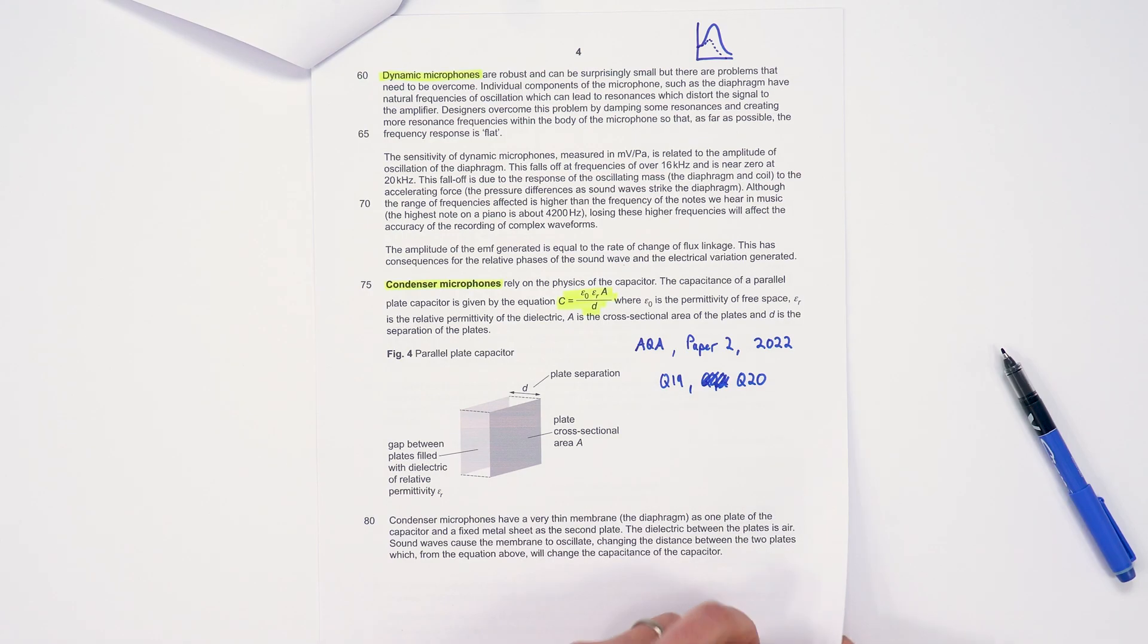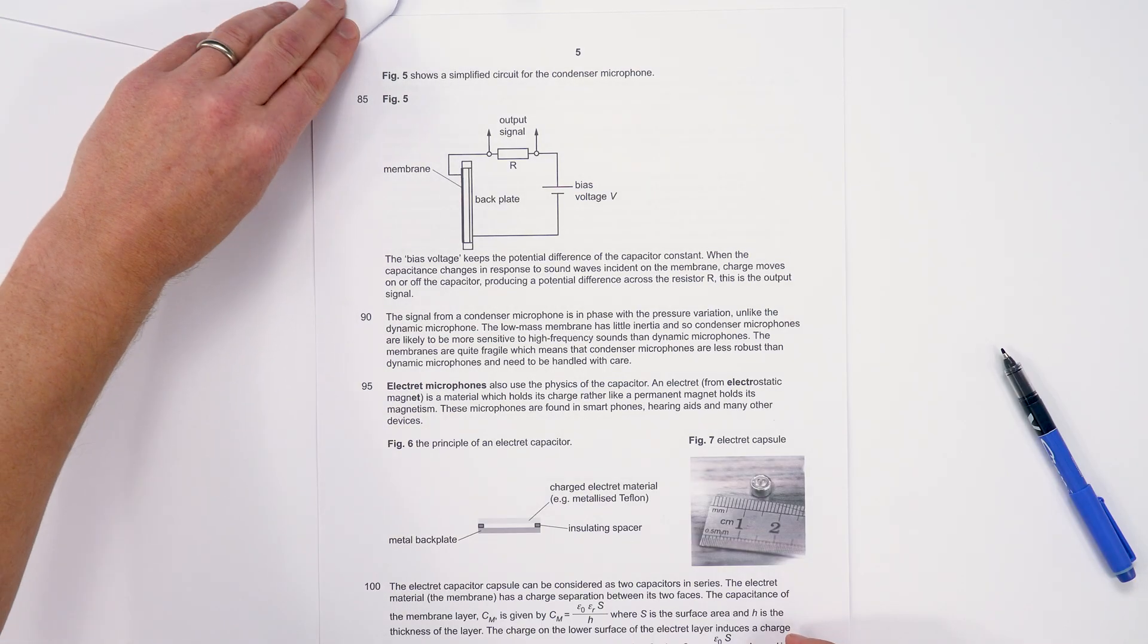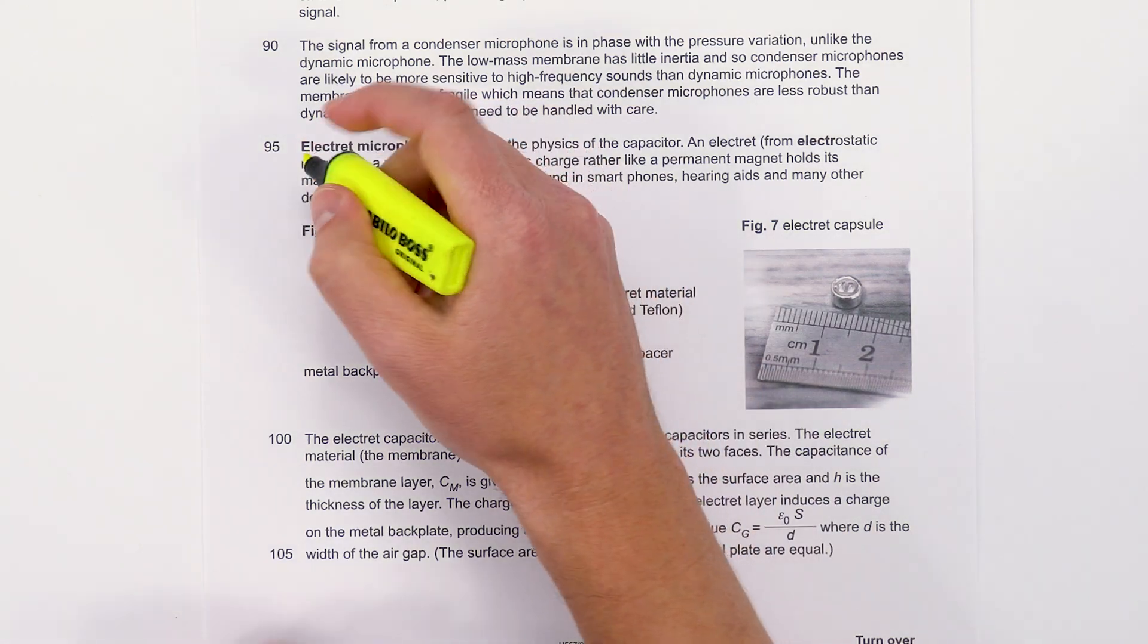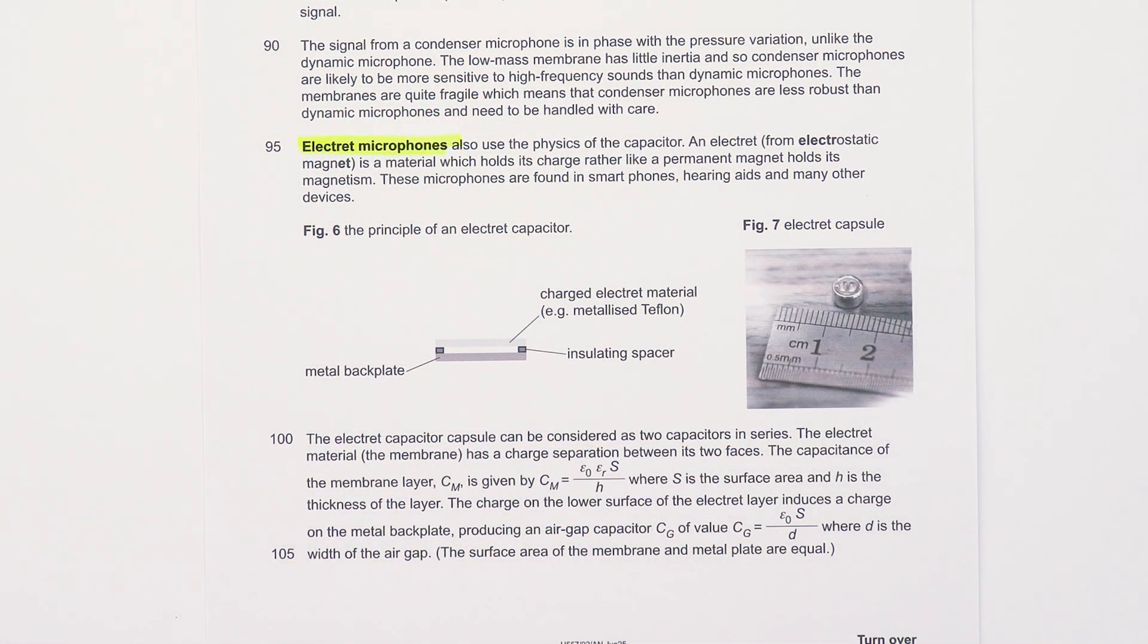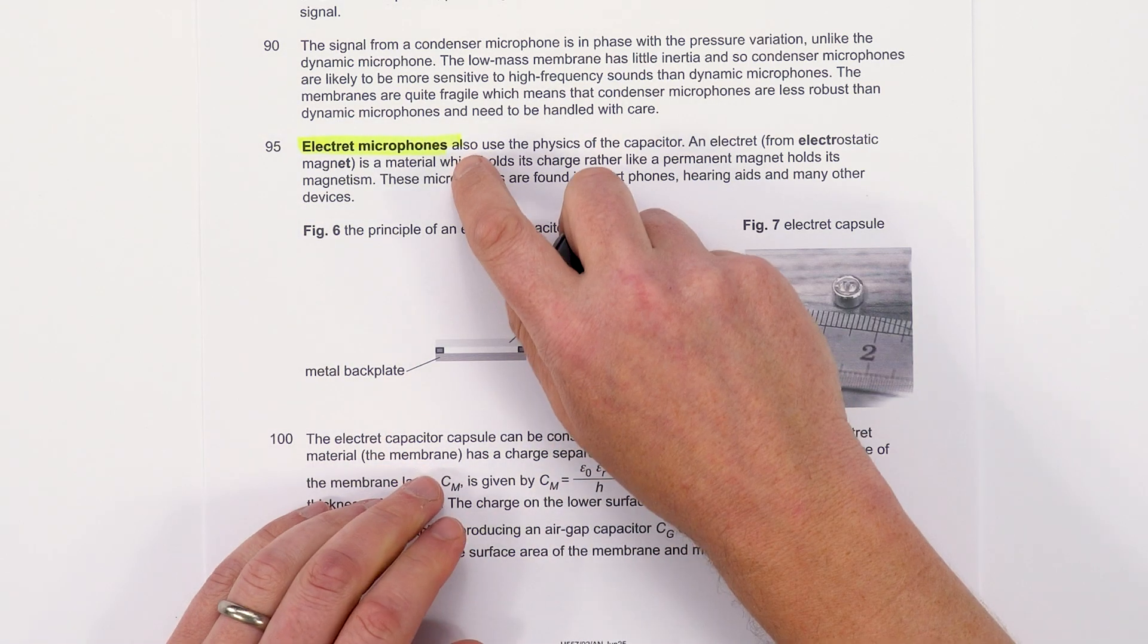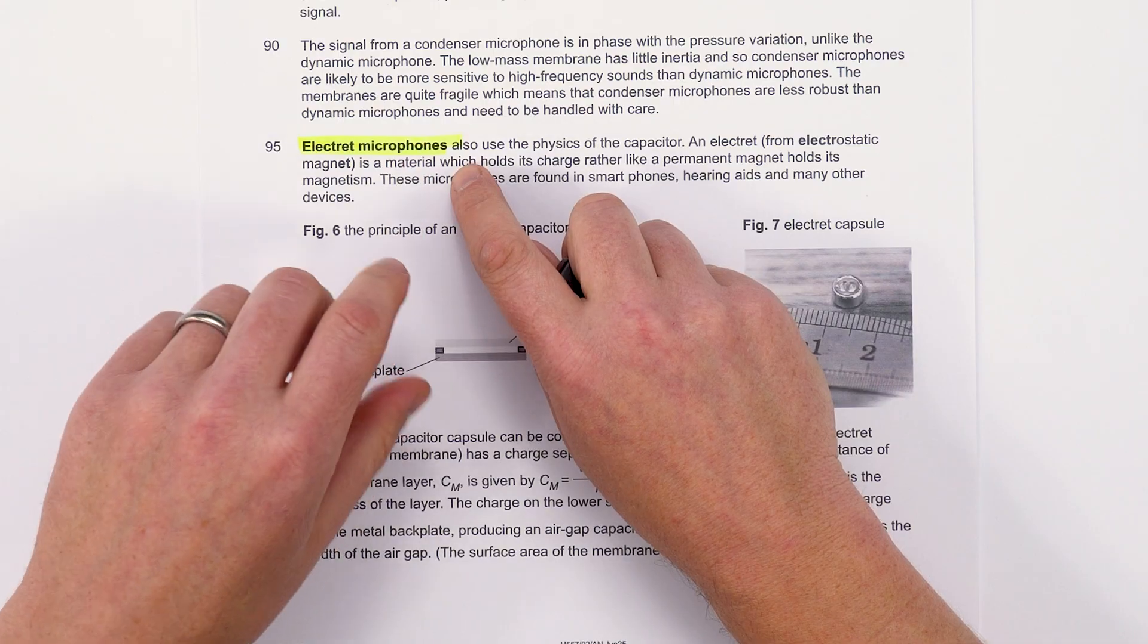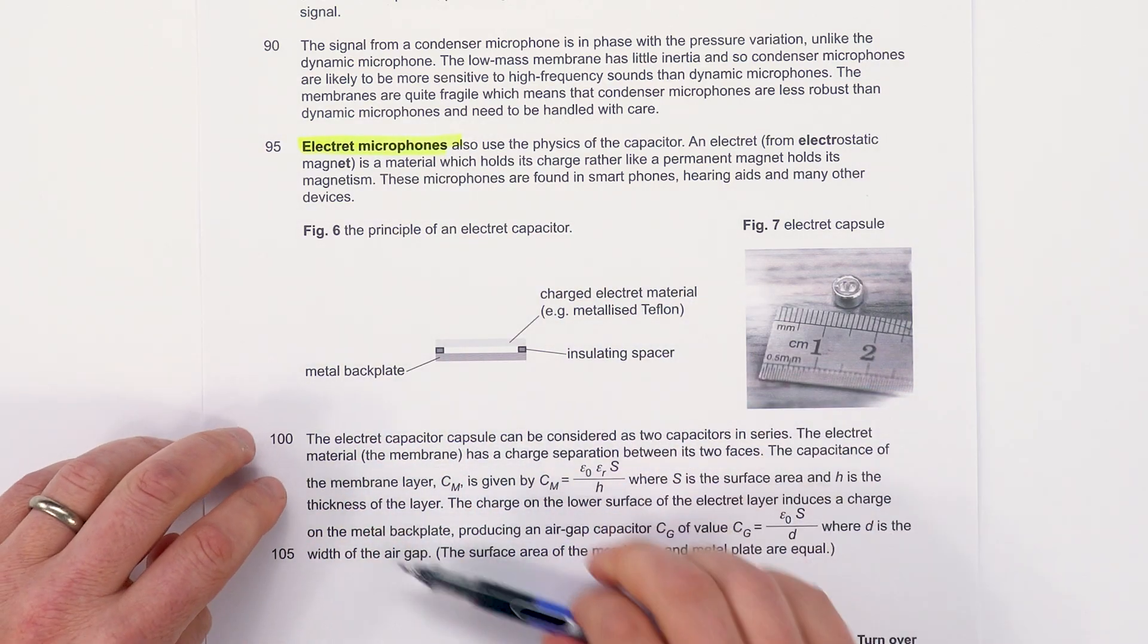The next one is the electret microphones. Again, if you're doing research on this, it's worth using either Google or maybe looking at AI. I just went to Claude and typed in 'explain how an electret microphone works for an A-level physics student,' and that gave a brief description. The key thing I think here that they could ask about is that effectively we've got two different capacitors.